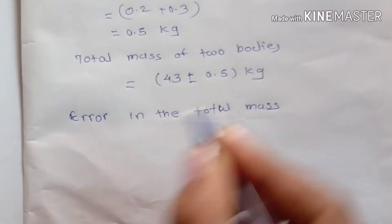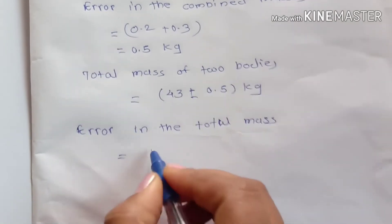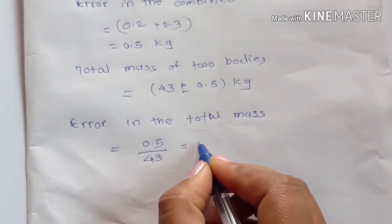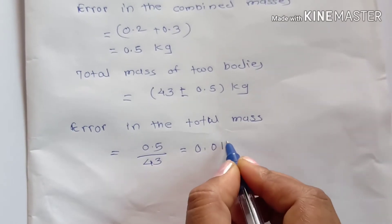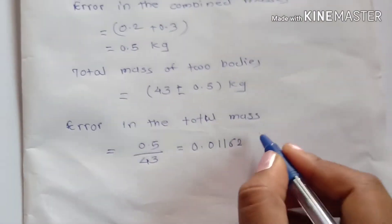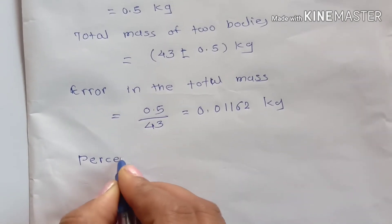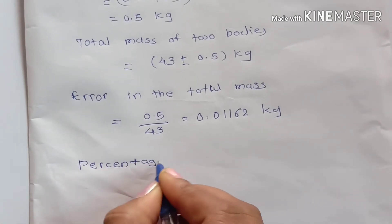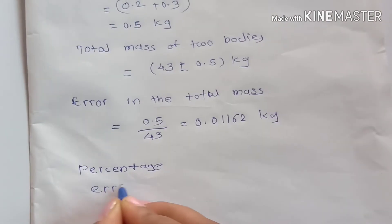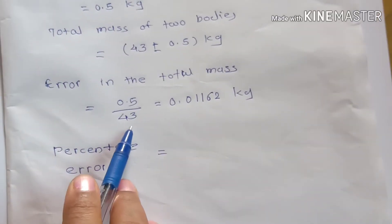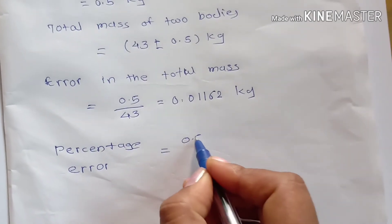The error in the total mass is equal to 0.5 divided by 43 and their answer is 0.01162 kg. Next we have to calculate the percentage error of this quantity.